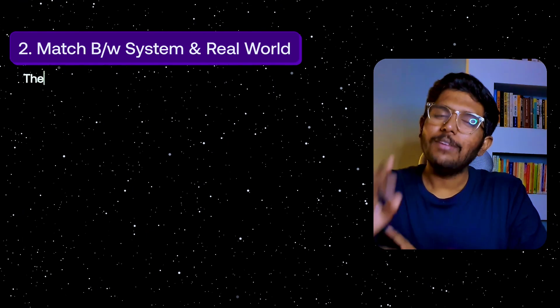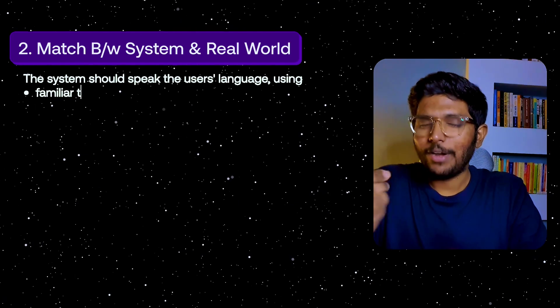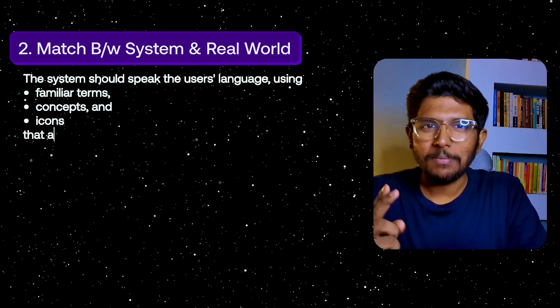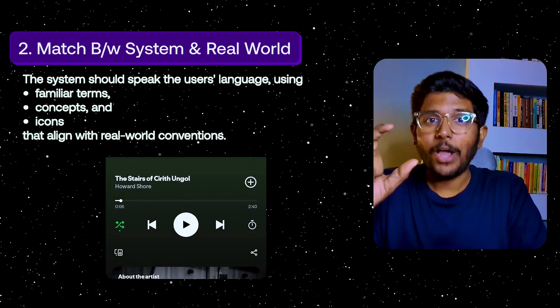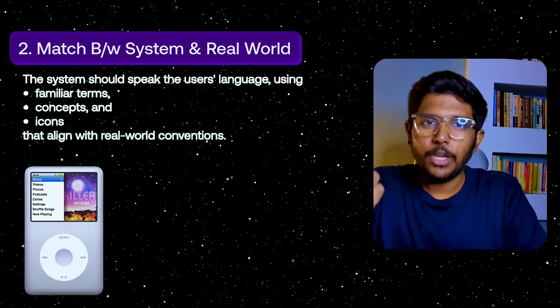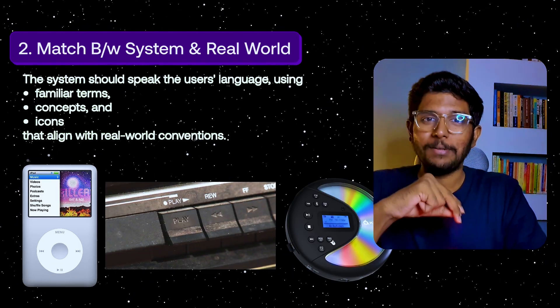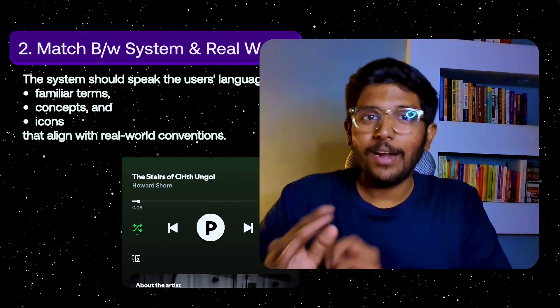Second principle: Match Between System and Real World. The system should use the user's familiar language with familiar terms, concepts, and icons from the real world. For example, the play button uses a triangle icon — the same triangle icon used in iPods, radios, and CD players. If you use familiar elements, the system will be easier to use and understand.